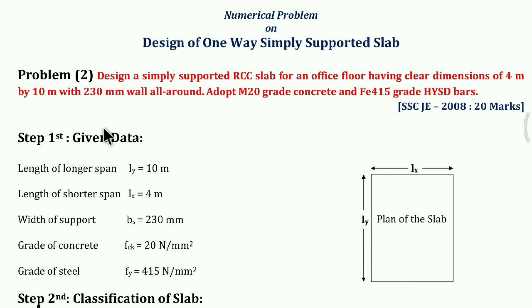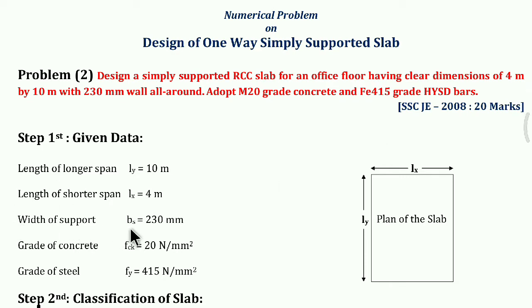Now let's solve the question. Step 1 — Given data. Length of longer span (Ly) = 10 meter. Length of shorter span (Lx) = 4 meter. Width of support (b) = 230 mm. Grade of concrete (fck) = 20 N/mm². Grade of steel (fy) = 415 N/mm².